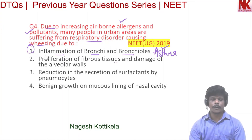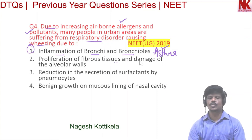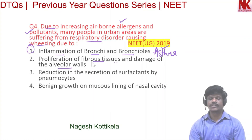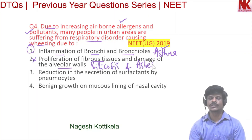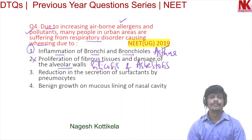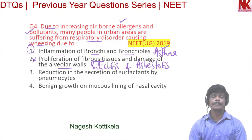Checking the other options: option two is proliferation of fibrous tissues and damage of alveolar walls — this is wrong because proliferation of fibrous tissues is seen in silicosis and asbestosis. These are occupational disorders seen in people working in industries where grinding and stone-breaking activities are highly prevalent.